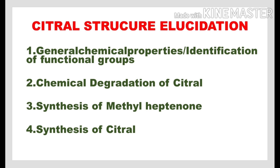For an easy understanding, structural elucidation of citrol can be made into four steps. The first step is understanding the general chemical properties or identifying the functional groups of citrol. The second step is understanding the chemical degradation of citrol. The third step is understanding the synthesis of methyl heptanone, one of the components obtained by chemical degradation. The fourth step is the synthesis of citrol.